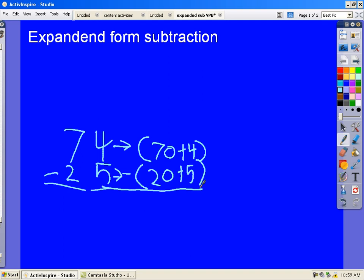It's time to subtract. Subtract the 4 and the 5. But you can't do that, so cross out the 70 and put 60 above it. Then cross out the 4 and make it a 14.